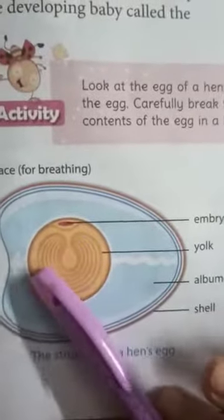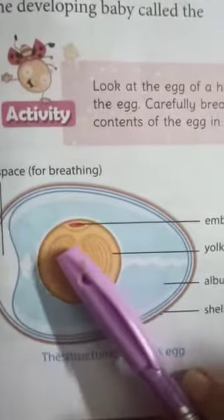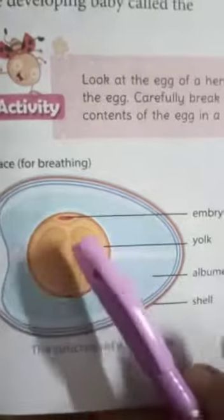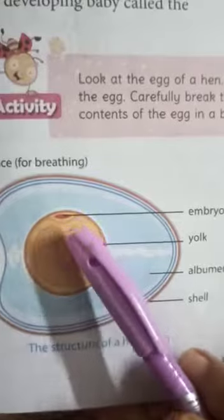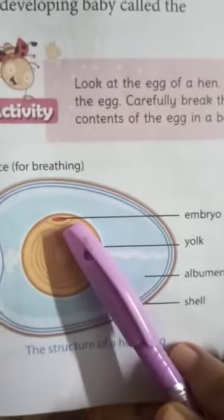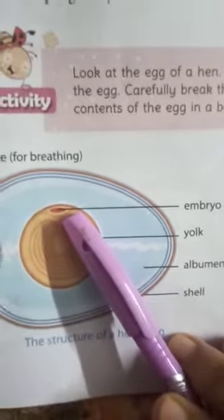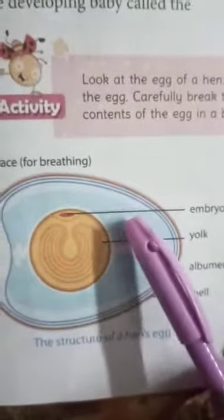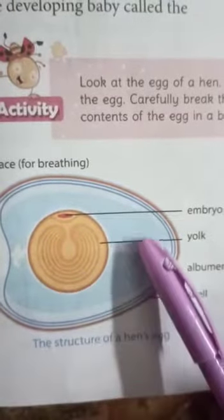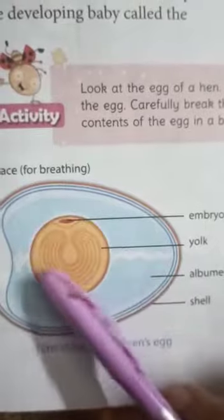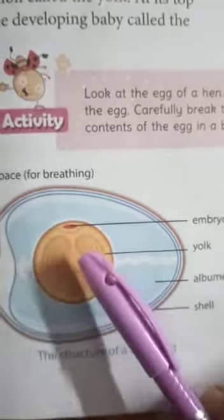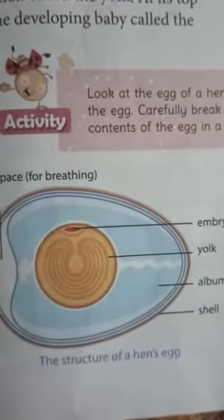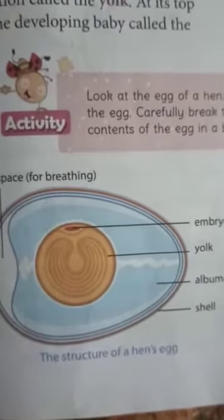As you can see here, there is a picture of an egg — the structure of a hen's egg. In the center, you can see a yellow portion called the yolk. At its top, there is a developing baby from where growth begins, which is called the embryo. Surrounding the entire yolk there is a white liquid portion called albumen, which protects the embryo and provides water and nourishment to it.